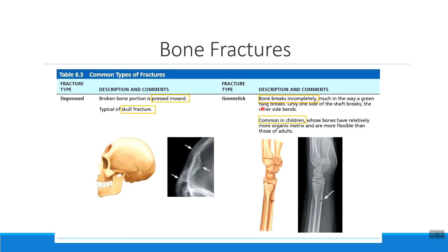Two other kinds of bone fractures to be familiar with are a depressed fracture and a greenstick fracture. Let's start with greenstick fractures because, just like epiphyseal fractures, greenstick fractures are also very common in children. In a greenstick fracture, we see a fracture that is incomplete, meaning we don't break the bone all the way through. This fracture got its name because if you try to break a green stick that's still mostly alive, only parts of it will break. So in a child's bone, if only parts of the bone break, we call that a greenstick fracture.